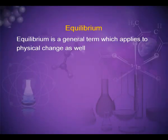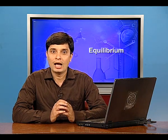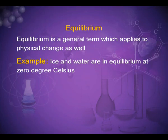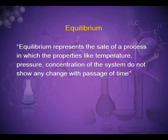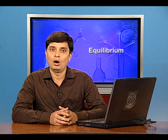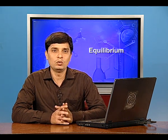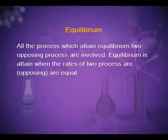Equilibrium is a general term which applies to physical change as well. For example, ice and water are in equilibrium at 0°C. Equilibrium represents the state of a process in which properties like temperature, pressure, and concentration of the system do not show any change with the passage of time. Equilibrium is attained when the rates of two opposing processes are equal.